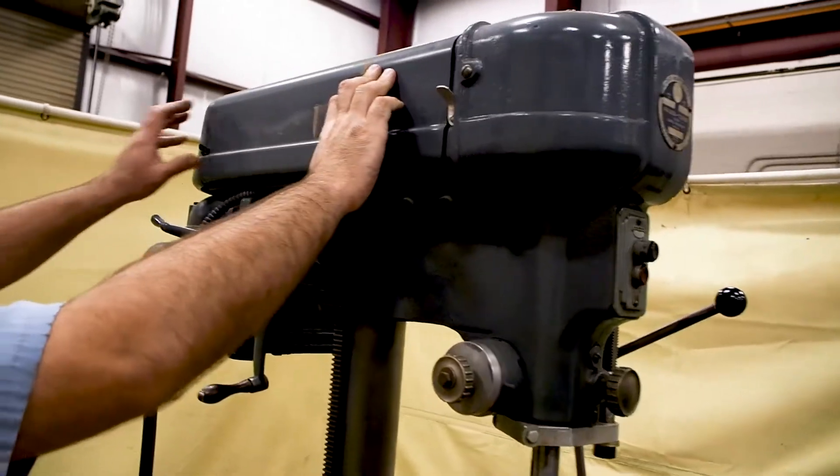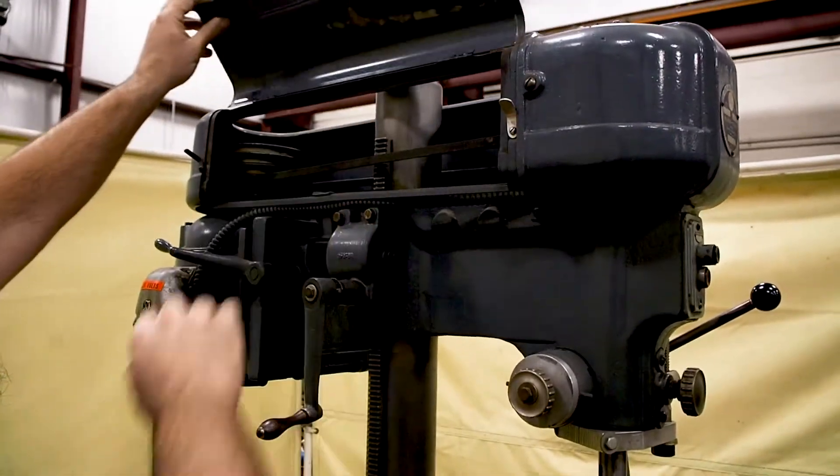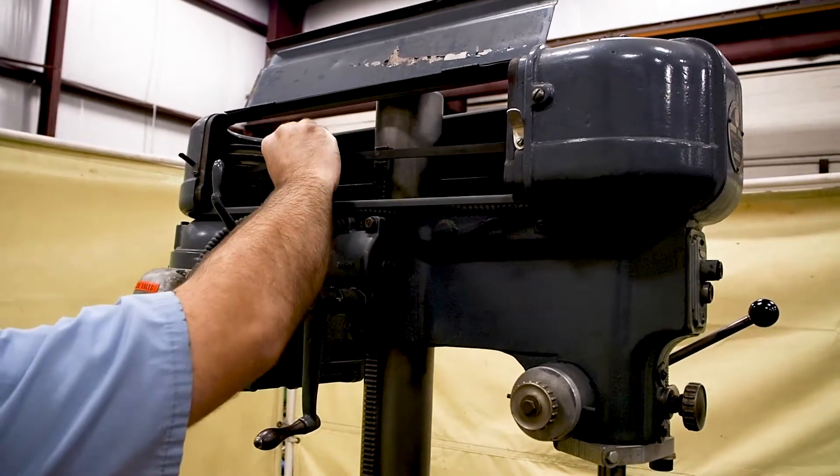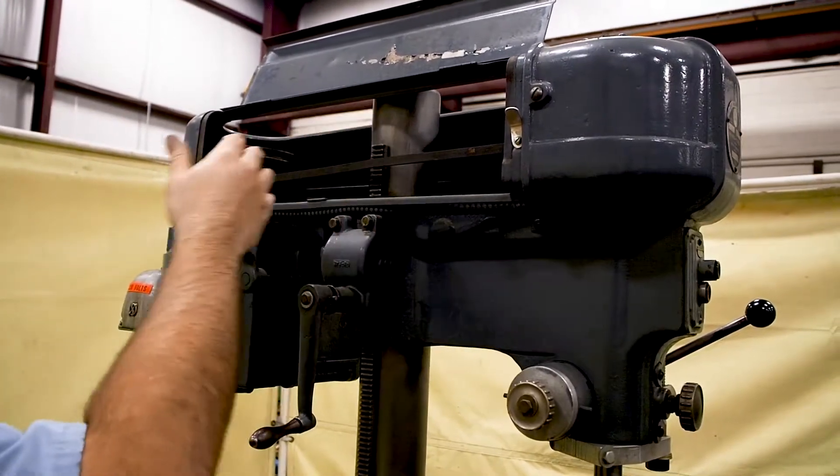I am going to change speed on this motor. This is a step pulley. What you would do—that right here loosens the motor, and then you will switch the belt on whichever desired pulley for your speed.